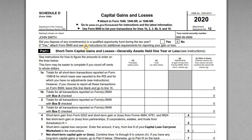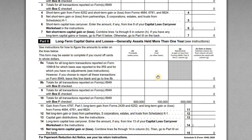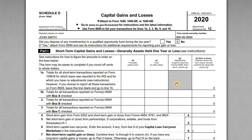Once the 8949 is completed, all that information flows up to Schedule D. John didn't dispose of any QOFs during the year, so he would indicate no. If he had sold them, he'd indicate yes and complete the appropriate fields on the QOF form and 8949. We're reporting the sales proceeds and cost basis for the Apple stock, but because of the adjustment for the rollover, the amount of gain or loss actually recorded on the return this year is zero.